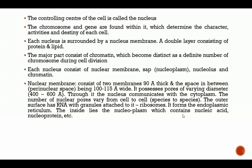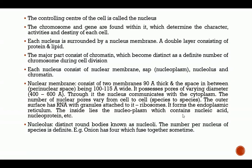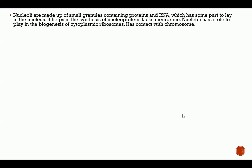The nucleolus is a distinct rounded body, also known as nucleoli. The number per nucleus per species is definite — for example, onion has four, which sometimes fuse together. The nucleolus is made up of small granules containing proteins and RNA, partly lying in the nucleus. It helps in the synthesis of nuclear protein, lacks a membrane, and has a role in the biogenesis of cytoplasmic ribosomes. It also has contact with the chromosomes.